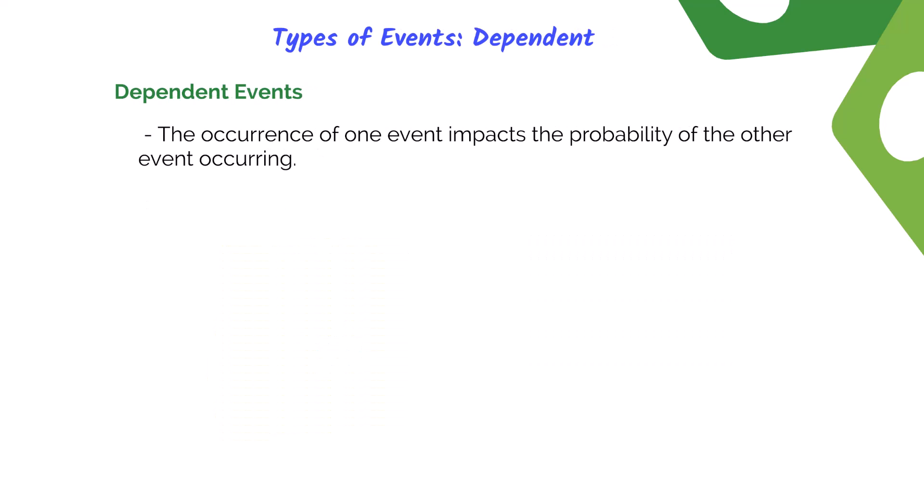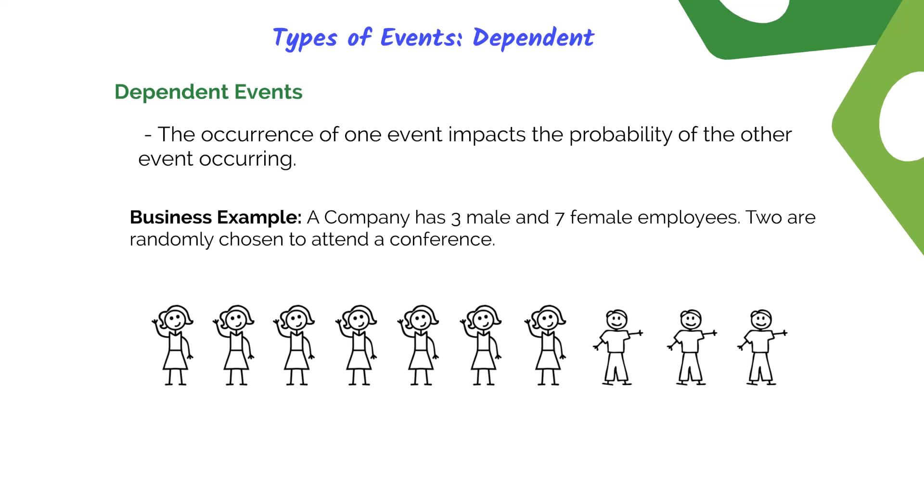The next type is dependent events, where the occurrence of one event impacts the chance of something else happening. For instance, consider a small company with three male and seven female employees, where two are randomly chosen to attend a conference. If the first person chosen is a female, when we figure out the chances of the next person being male, we must remove that first person from the pool. This changes the probability of who gets picked for the second slot, so the probability for the second person being male changes after we pick the first person.